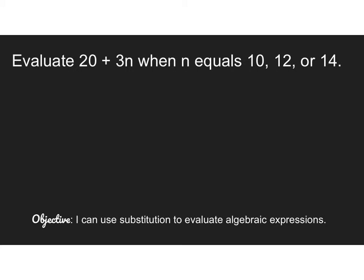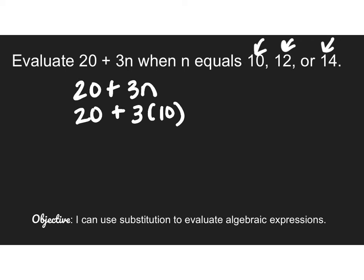Let's take a look at an expression with a little more to it. So we've got 20 plus 3n. And n is going to equal 3 different things. So we have 3 problems here. In the first one, it says n equals 10. So our problem becomes 20 plus 3 times 10. Right underneath that, I'm going to do my multiplication first. So 3 times 10 is 30. I'm going to rewrite the problem. 20 plus 30 is 50.